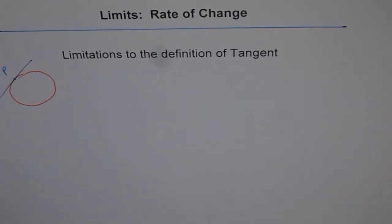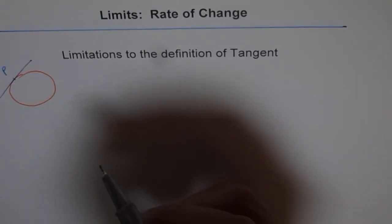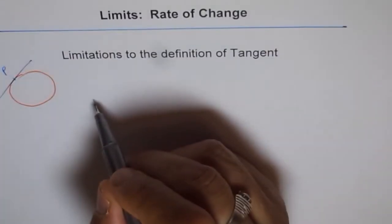Now we are in grade 12 and now we need to understand what tangent is. This definition of tangent has its own limitations, which says that the tangent touches the curve at one point only. Now you could have tangents which could touch the curve at more than one point.